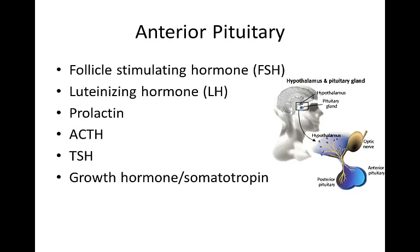The anterior pituitary. The major hormones of the anterior pituitary gland are follicle stimulating hormone, luteinizing hormone, prolactin, ACTH, TSH, and growth hormone. The secretion of these major hormones is controlled by releasing factors secreted by the hypothalamus. These releasing factors reach the anterior pituitary by way of the bloodstream in a special circulation called the pituitary portal blood system. These hormones released by the anterior pituitary enter the general circulation and are transported to their target organs.